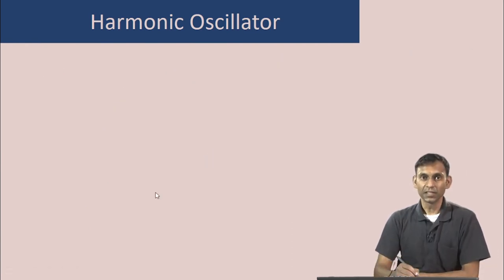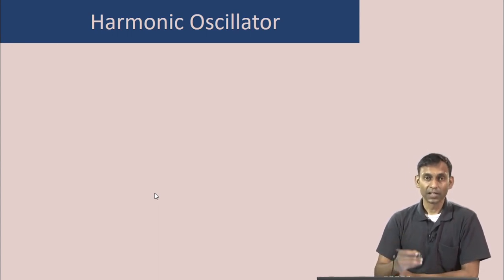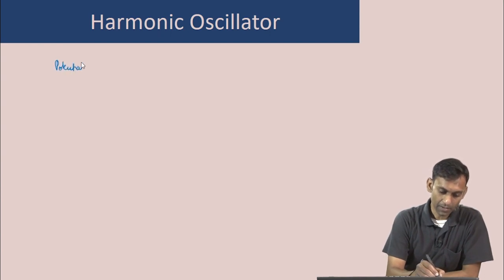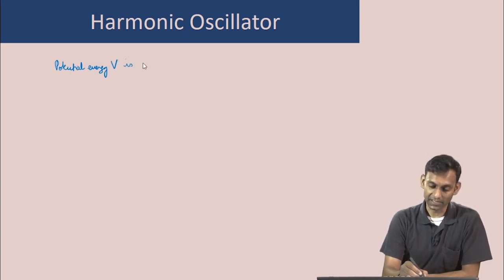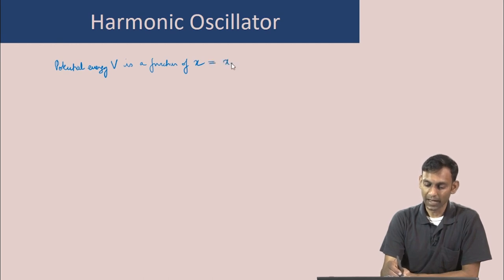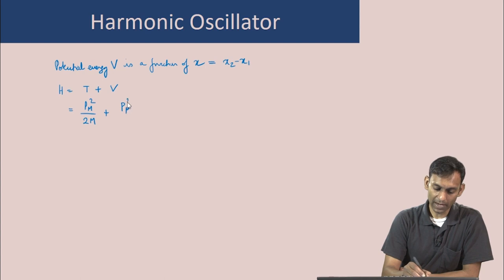The potential energy of the two-mass system connected by a spring depends only on the relative separation between the two masses. So the potential energy V is a function of the relative coordinate x = x2 - x1. The full Hamiltonian is therefore H = P_M²/(2M) + p_μ²/(2μ) + V(x).